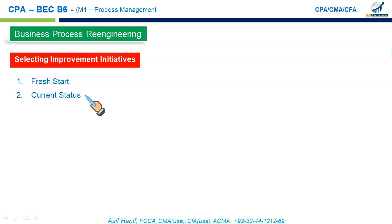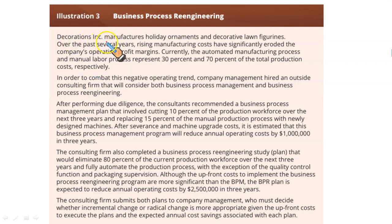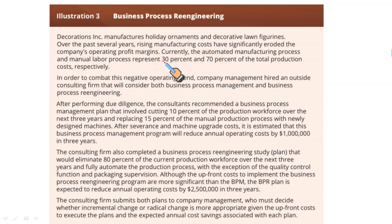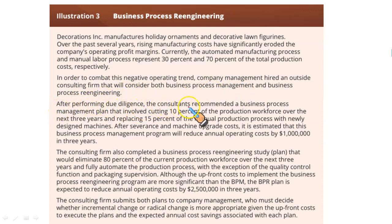Illustration: Decorations Incorporated manufactures holiday ornaments and decorative lawn figurines. Rising manufacturing costs have significantly eroded profit margins. Currently, the automated manufacturing process and manual labor represent 30% and 70% of total production costs respectively — meaning manual labor is the major cost driver. Management hired an outside consulting firm to consider both BPM and BPR approaches. The consultants recommended a BPM plan: cutting 10% of the production workforce over three years and replacing 15% of manual production with newly designed machines.